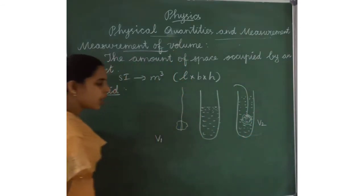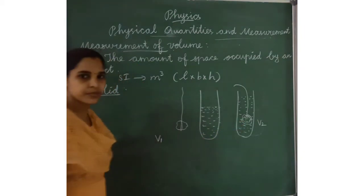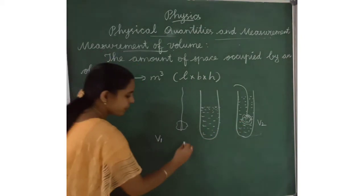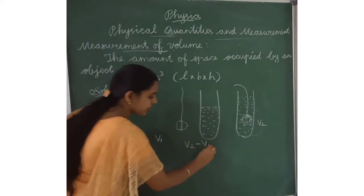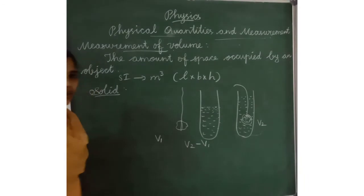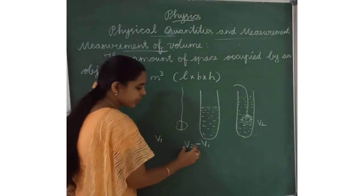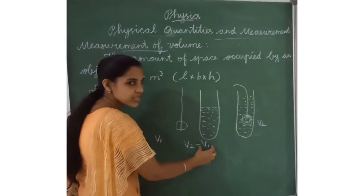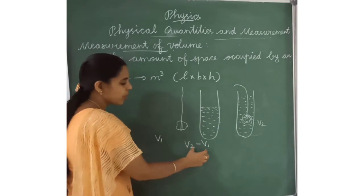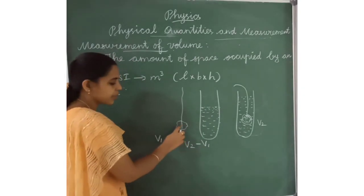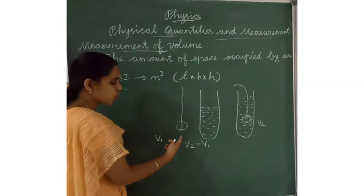To measure the volume of the stone: B2 minus B1. When we subtract B2 minus B1, we get the volume of the irregular solid — that is the volume of the stone.